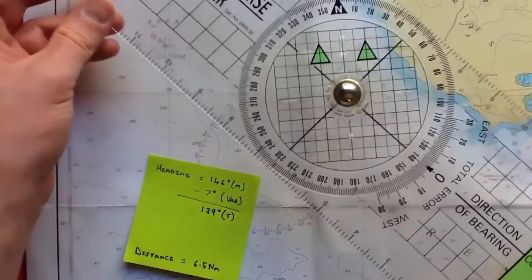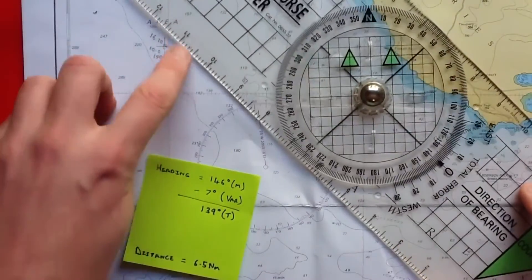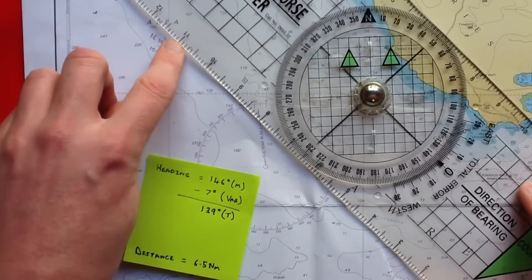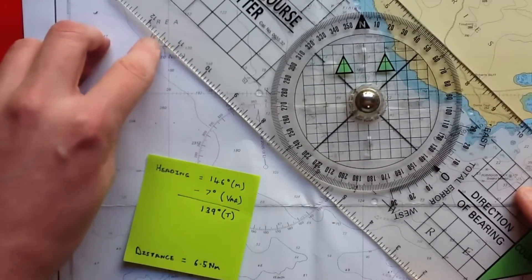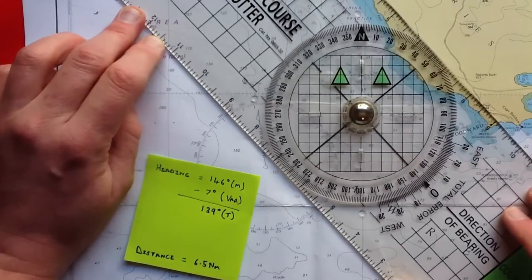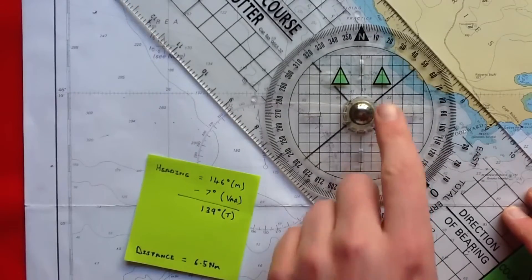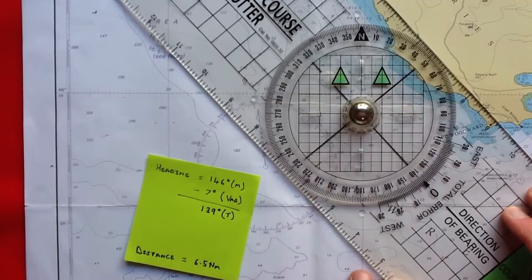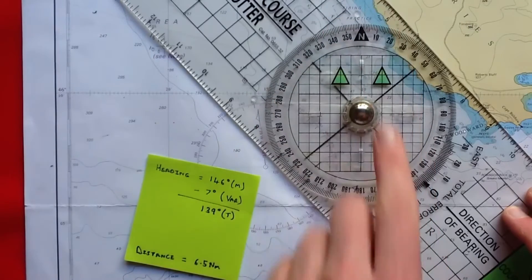We present the plotter to the chart, aiming this edge for our starting position. And then twisting the plotter until these arrows line up with the north lines running up the chart.